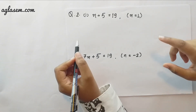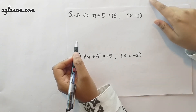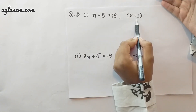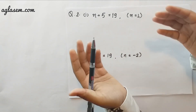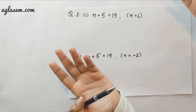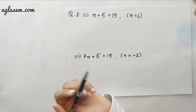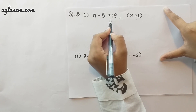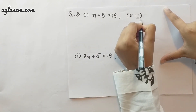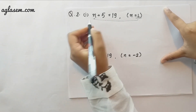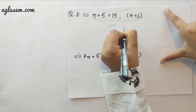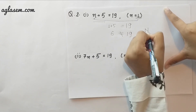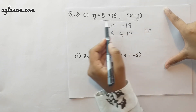Now let's go to the second question. The first sub-question is n plus 5 equals to 19. The value of n here is 1. We put the value into the equation: 1 plus 5 equals to 19. 6 is not equal to 19, therefore this value of n does not satisfy the equation.